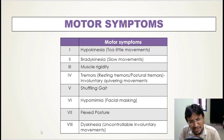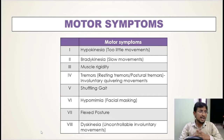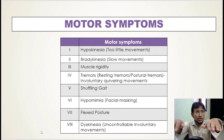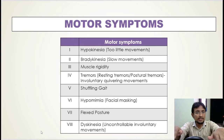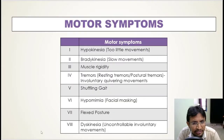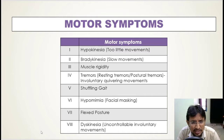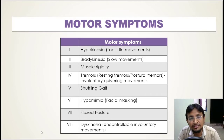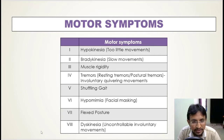A postural tremor occurs when a person maintains a position against gravity. When you ask a Parkinson's patient to stretch their arms and maintain a position against gravity, they start to experience tremors — so these tremors, re-emerging by holding the arms against gravity, are called postural tremors. Both resting and postural tremors can be treated with deep brain stimulation (DBS), which involves implanting electrodes within certain brain areas. These electrodes produce electrical impulses that regulate the abnormal electrical impulses causing tremors.